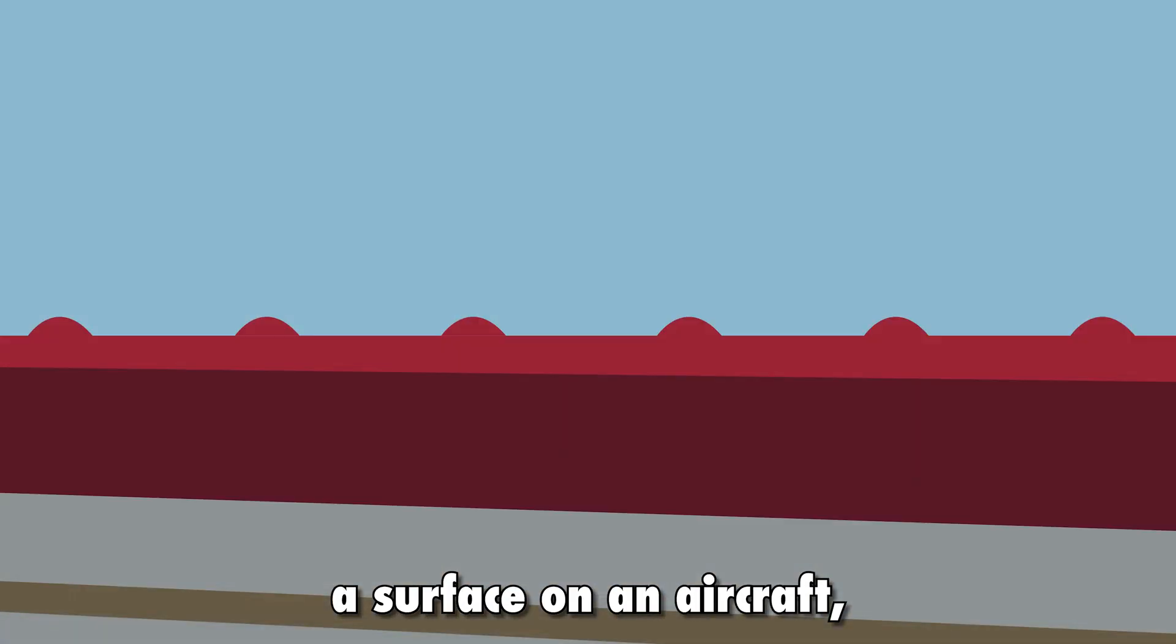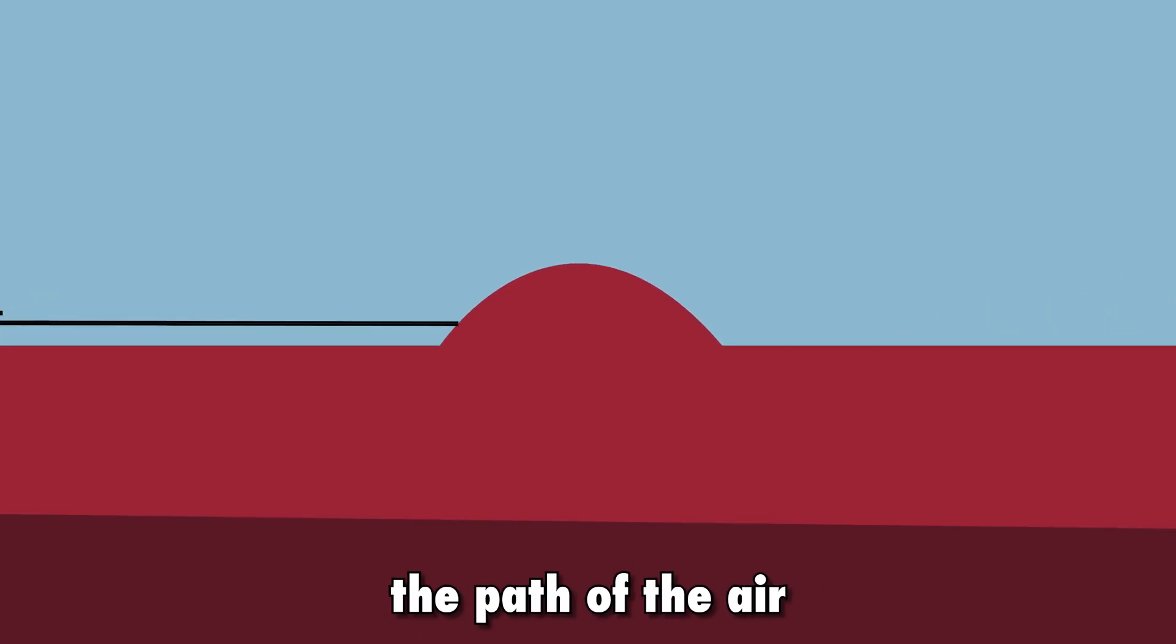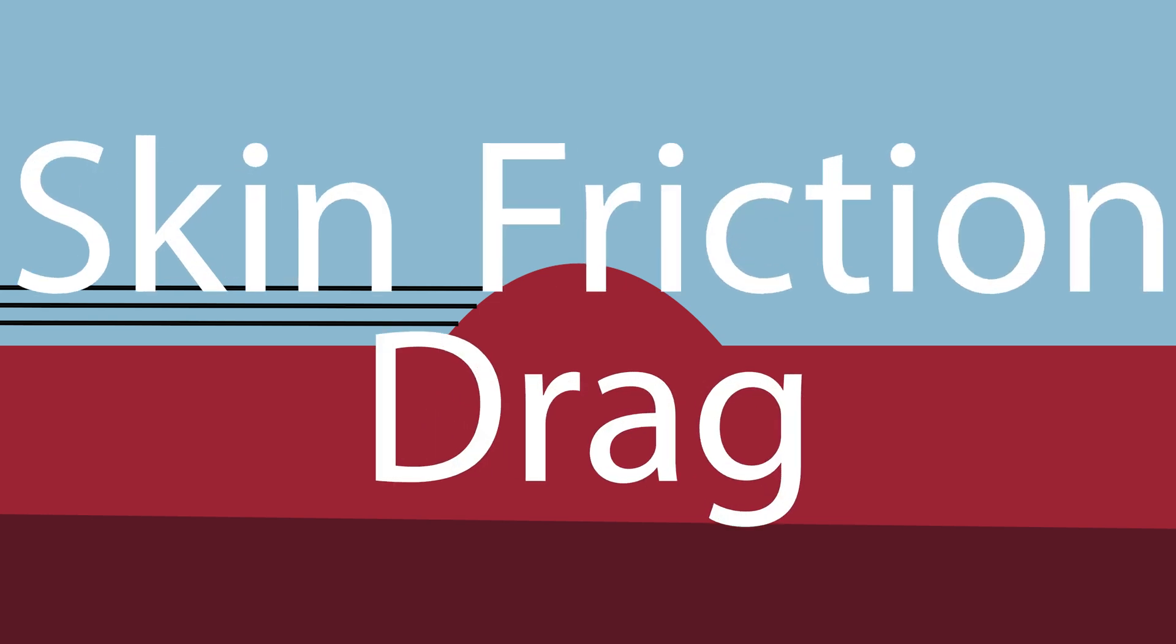Secondly, when air molecules hit a surface on an aircraft, they hit small bumps and deformities. This slows down the path of the air molecules over the surface, creating what we call skin friction drag.